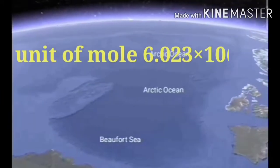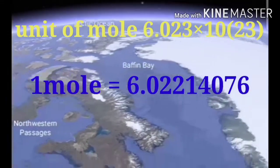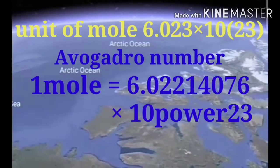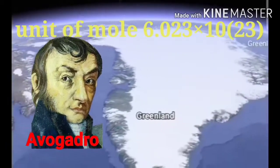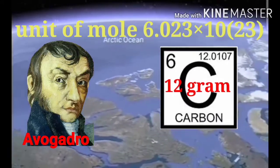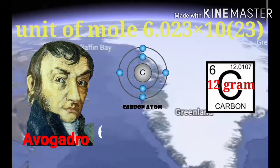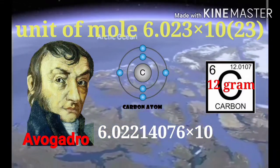Now know about moles. The value of 1 mole is 6.02214076 times 10 to the power 23, also called Avogadro number. It was given by a scientist named Avogadro. Scientist Avogadro took 12 grams of carbon-12 and found the number of carbon atoms present in it was approximately 6.02214076 times 10 to the power 23.